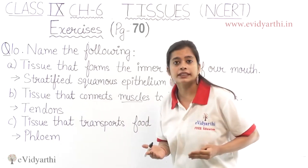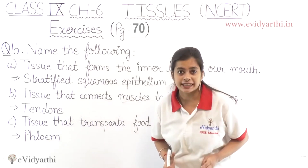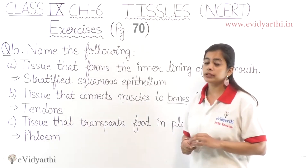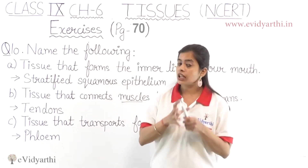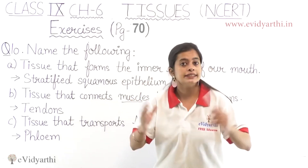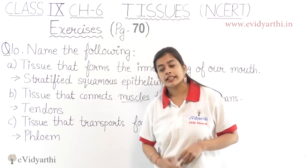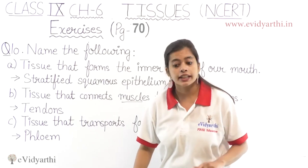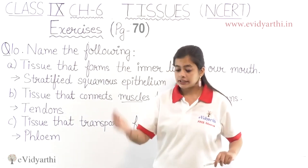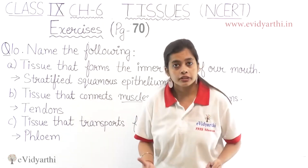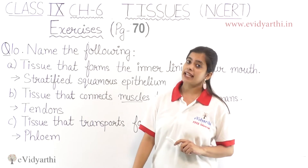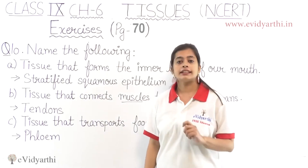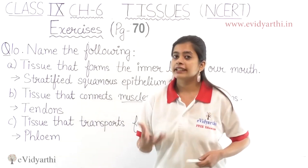I will tell you about extra points you can be asked questions on. Now, tissues that transport food in plants — what transports within the plant? The fluid does. You can ask about xylem: from the roots and leaves, xylem transports water from the soil. And for food transport in plants, the answer is phloem.